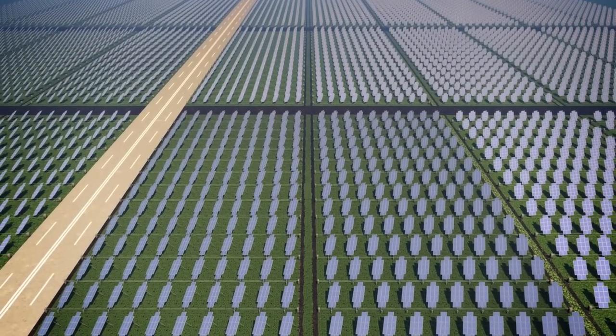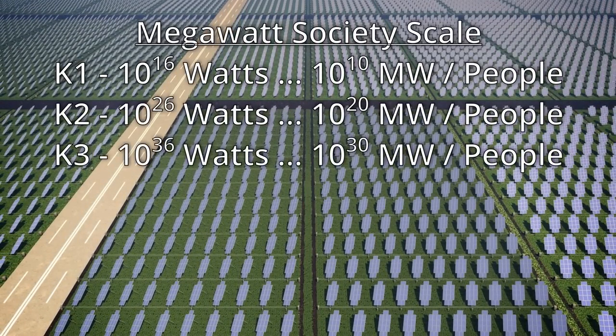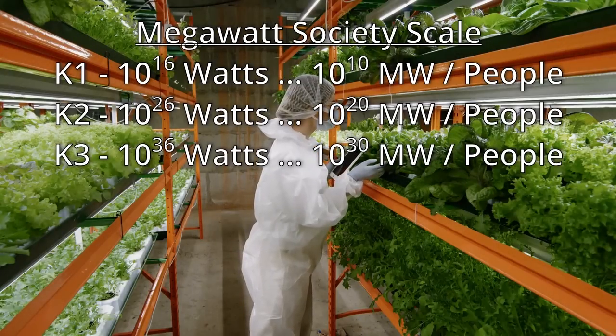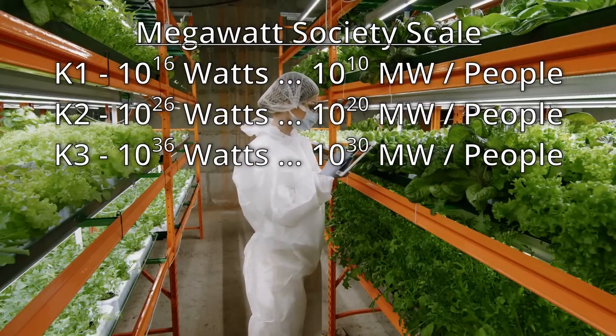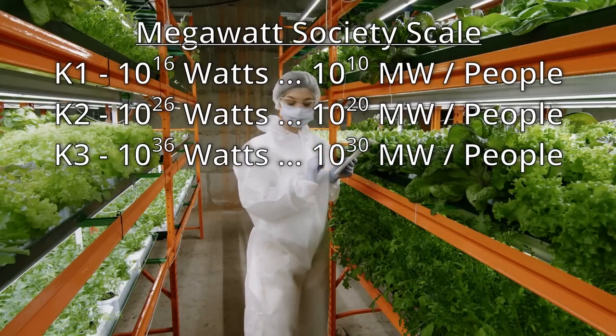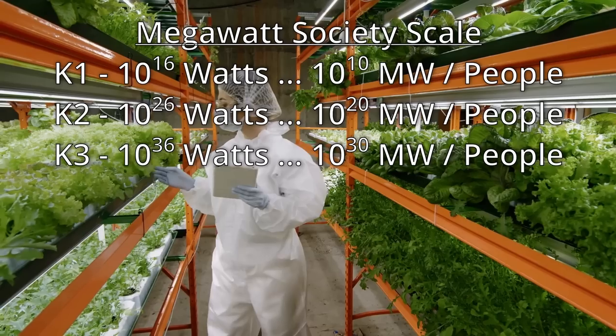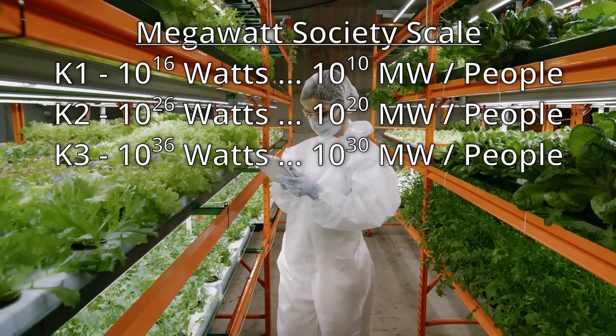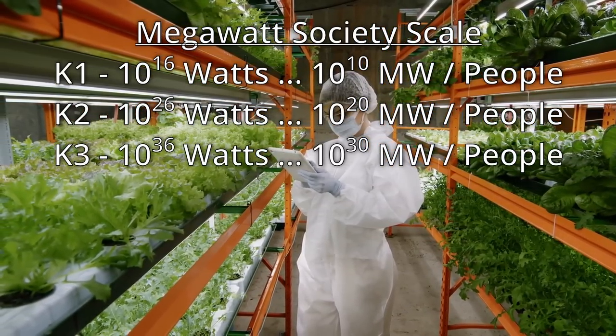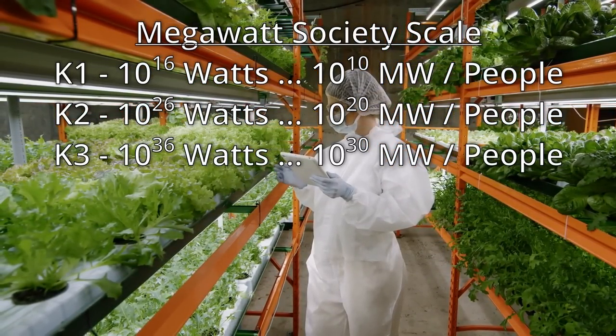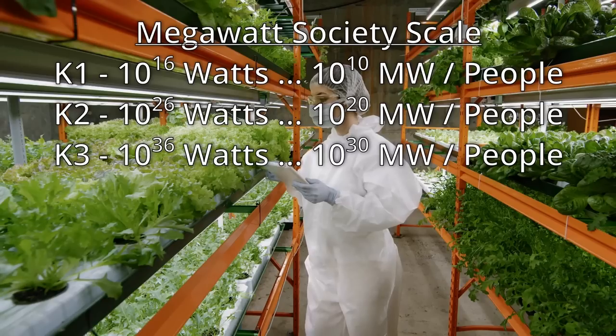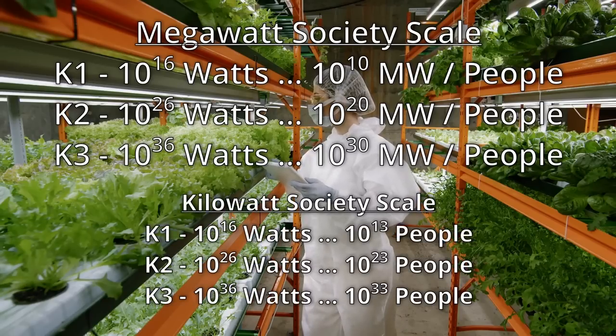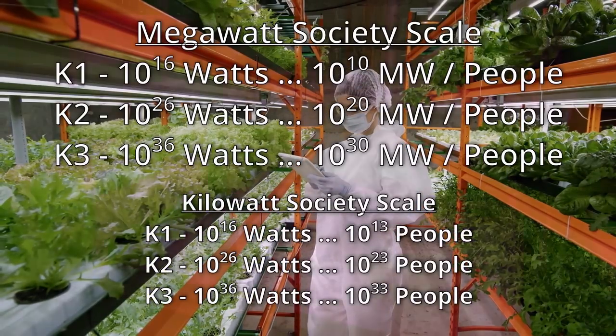We refer to this society as a megawatt society for the rest of the episode, and its Kardashev-level population is 10 to 10 for K1, 10 to 20 for K2, and 10 to 30 for K3, conveniently easy to work with. This is of course an intentionally round number, and show regulars know we've run calculations showing how even 2 kilowatts, or even less, might be enough for a person with hydroponics. We refer to this as a kilowatt society going forward.